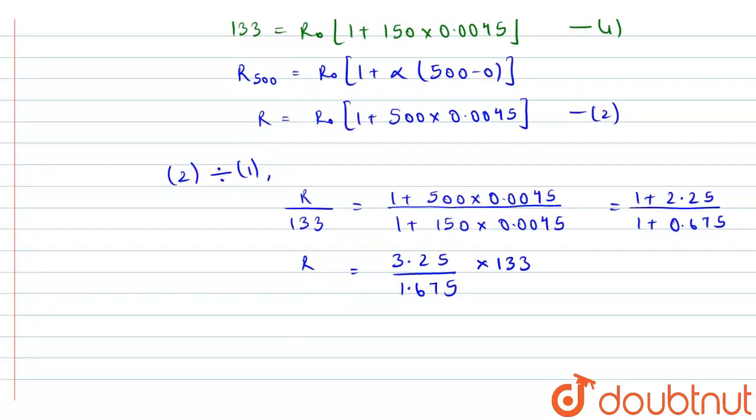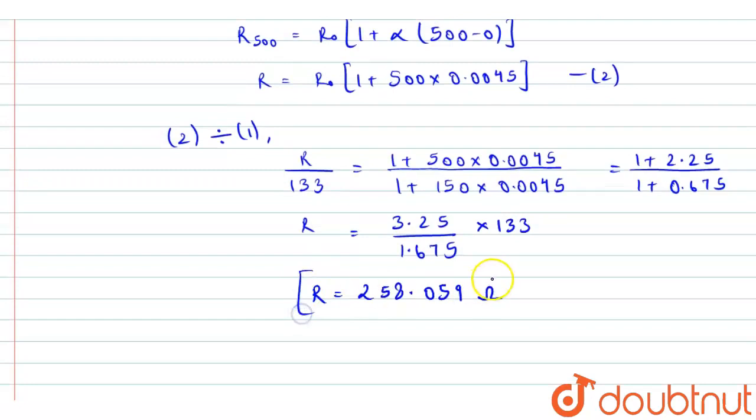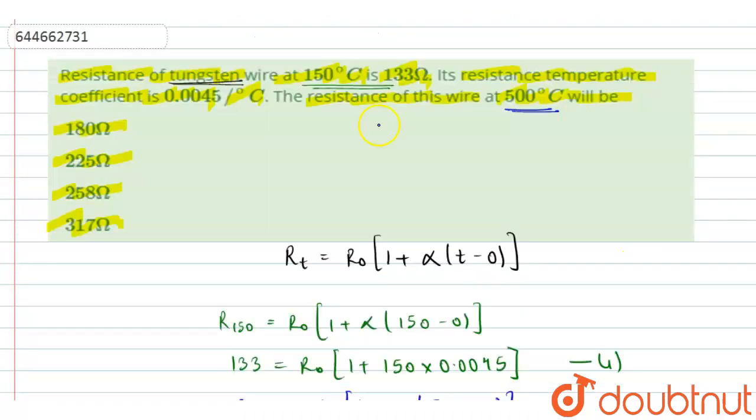From here if I cross multiply, we will get R equals 3.25 into 133 divided by 1.675. And after solving this we will get R nearly equal to 258.059 ohms, and this is the required answer.